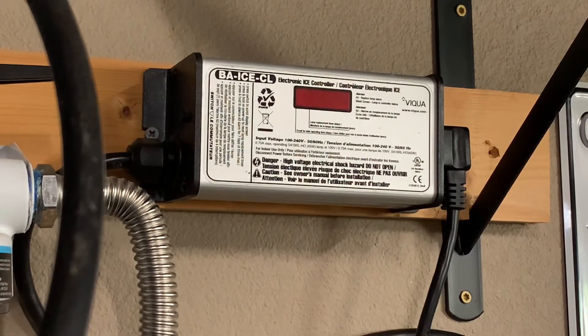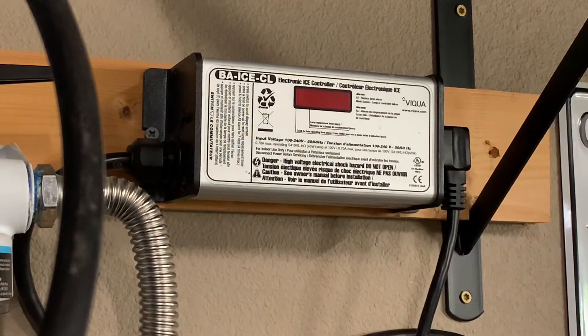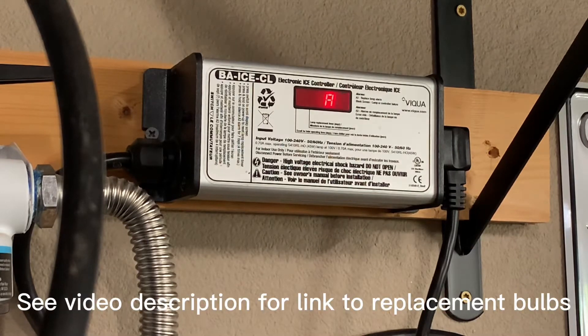If your UV water sanitation system is beeping like this at you, it probably means that after one year your bulb is now worn out and you need to replace it. You can find these replacements on Amazon, I'll put a link in the video description.